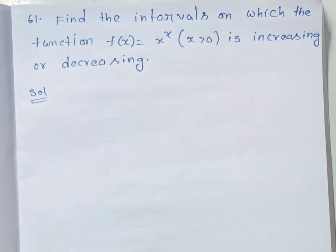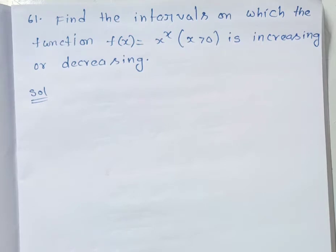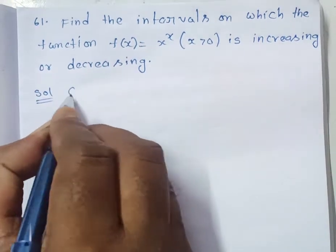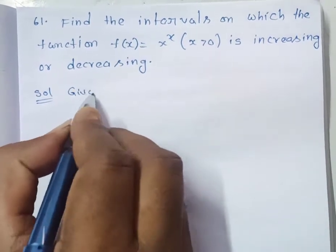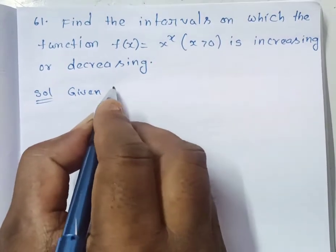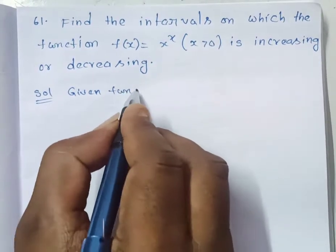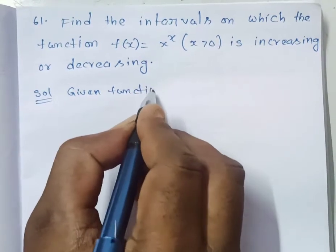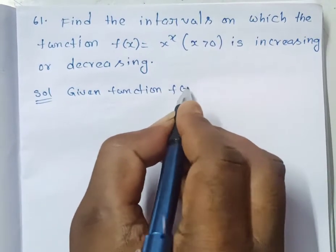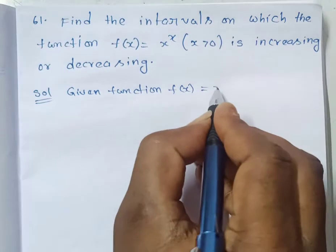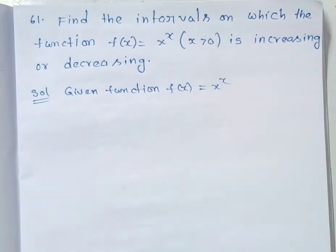Find the intervals on which the function f of x is equal to x^x, where x is greater than 0, is increasing or decreasing. So we need to find the increasing interval and the decreasing interval.